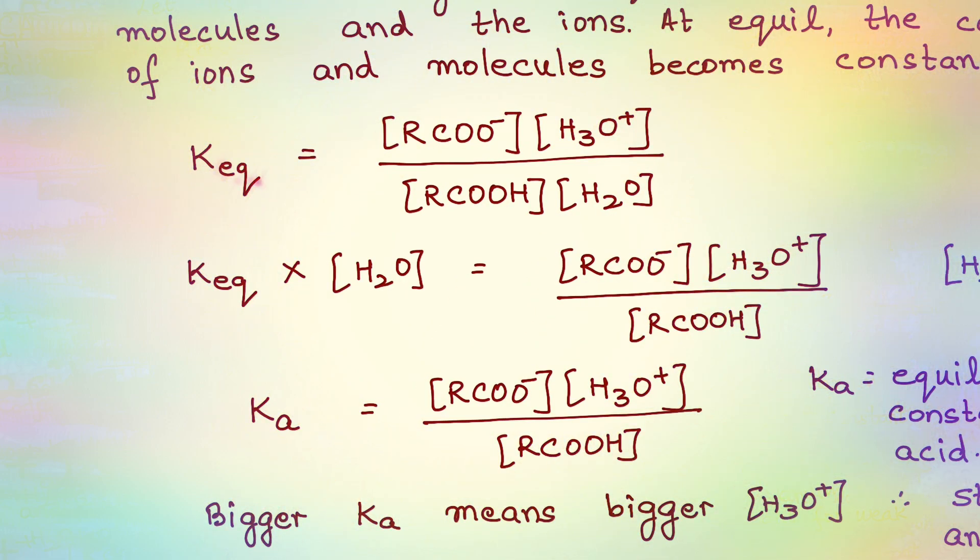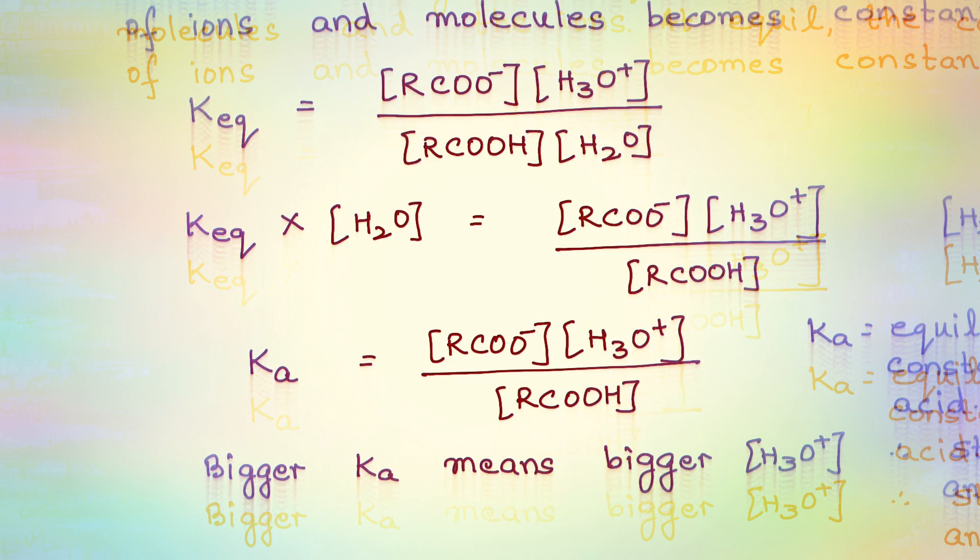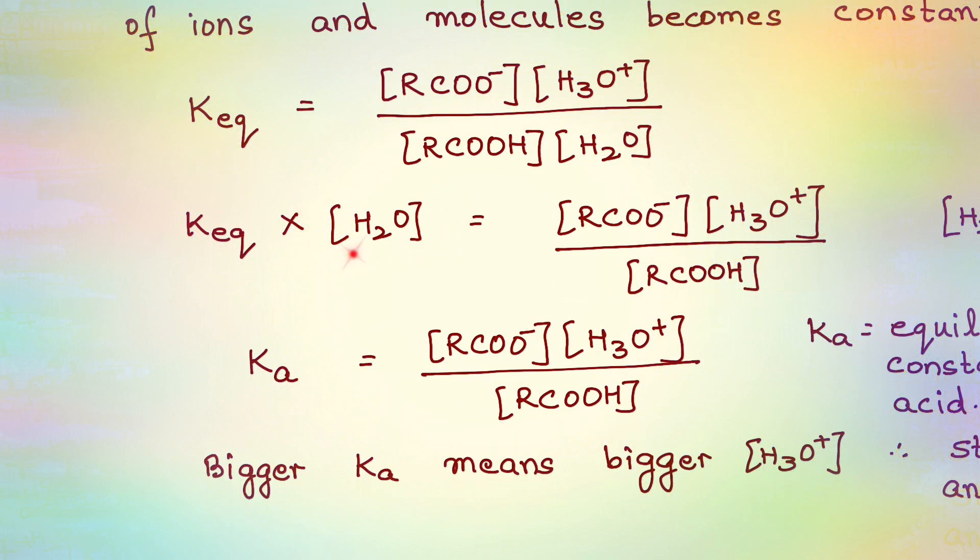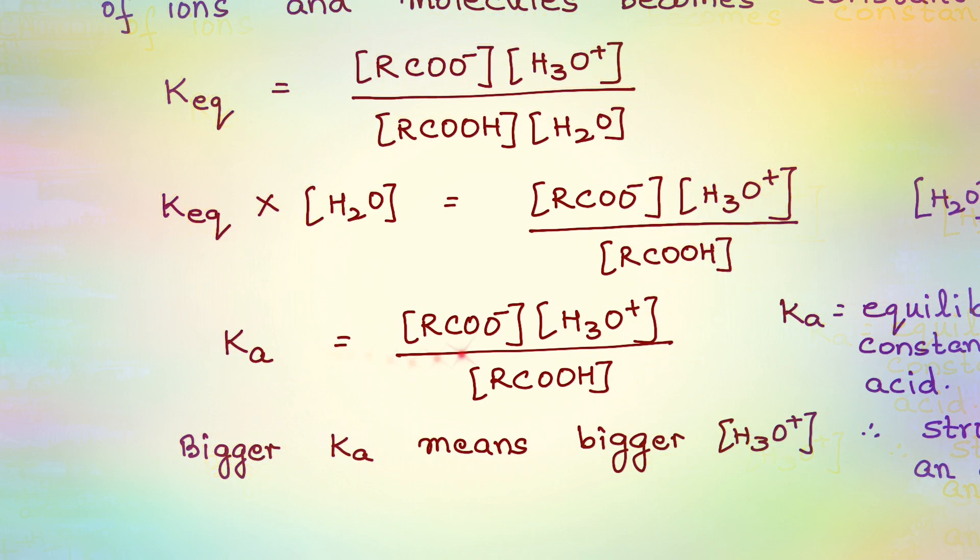Look at this equilibrium expression: RCOO- times H3O+ divided by RCOOH and water. Be very careful about the square brackets that we have used; they indicate concentration in moles per liter or moles per decimeter cubed. Since water is going to be almost constant, what we do is multiply the equilibrium constant with the concentration of water, which is kind of constant, and we get another constant. So I have RCOO- times H3O+ divided by the concentration of the undissociated carboxylic acid. This gives me a new constant, Ka, because I am talking about an acid. This is known as equilibrium constant of a weak acid because there is partial ionization.